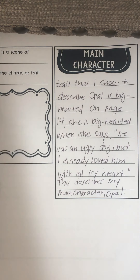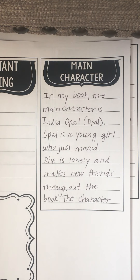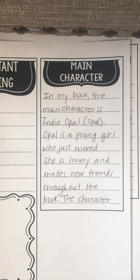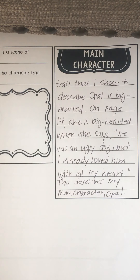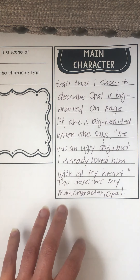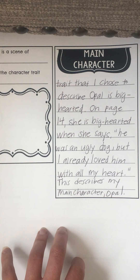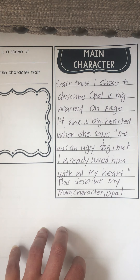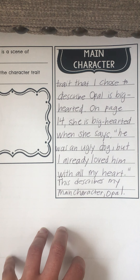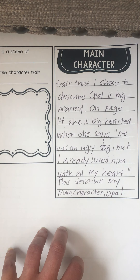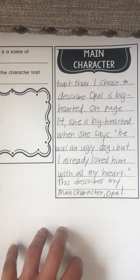So in my book, the main character is India Opal, or just Opal. Opal is a young girl who just moved. She's lonely and makes new friends throughout the book. The character trait I chose to describe Opal is big-hearted. On page 14, she is big-hearted when she says, 'He was an ugly dog, but I already loved him with all my heart.' This describes my main character Opal.